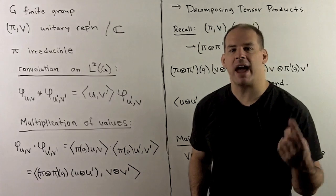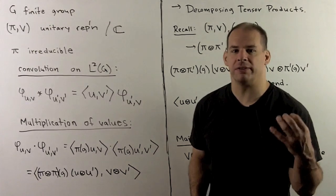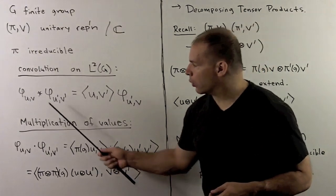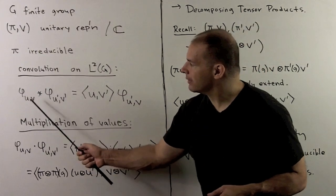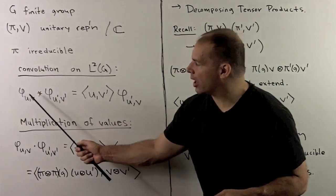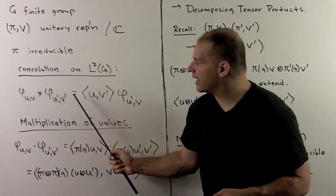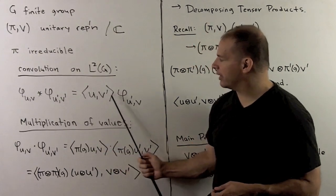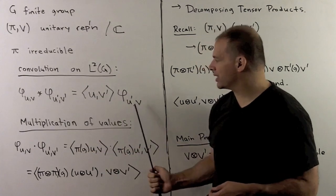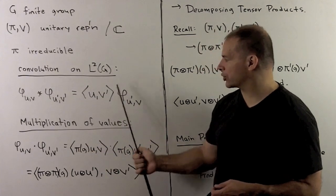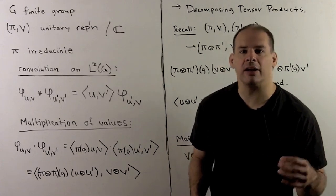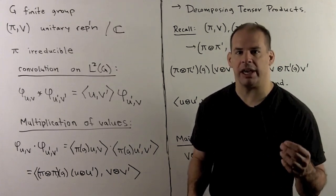This is going to be the natural multiplication of functions when we're working on a group. Our rule is: if I take convolution and matrix coefficients, we pair up the outside entries in the inner product, and then match up the inside entries to get another matrix coefficient. So this is supposed to be an analog of matrix multiplication.